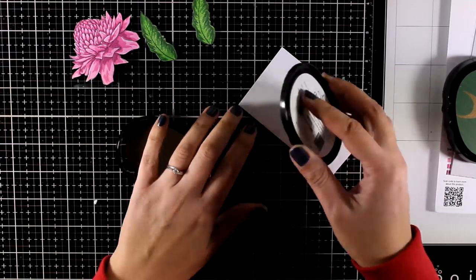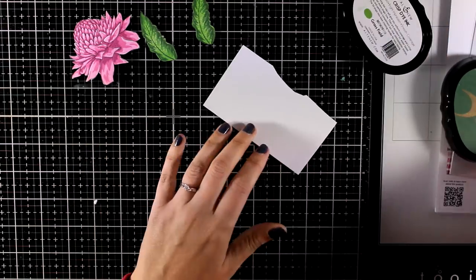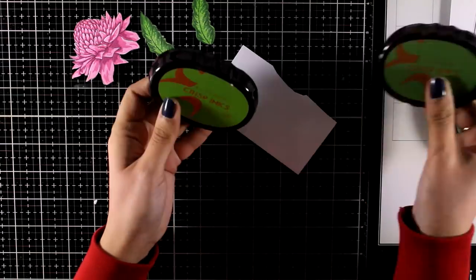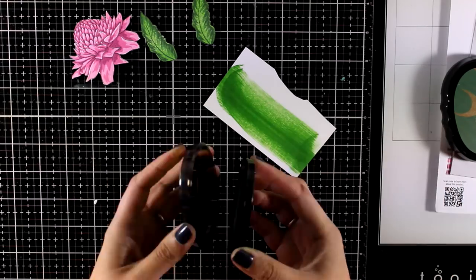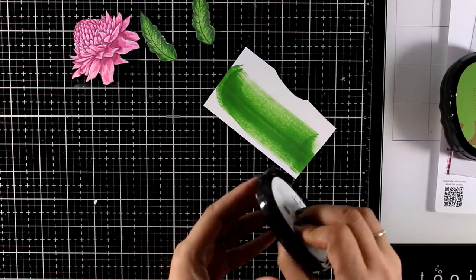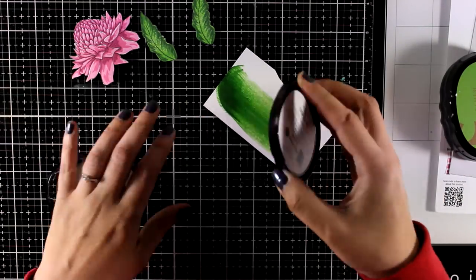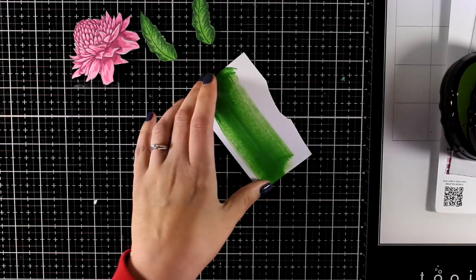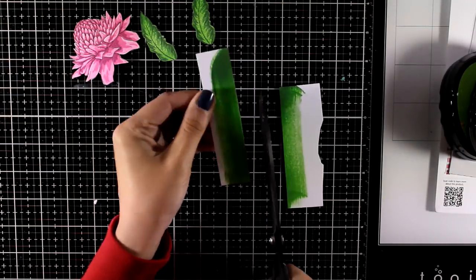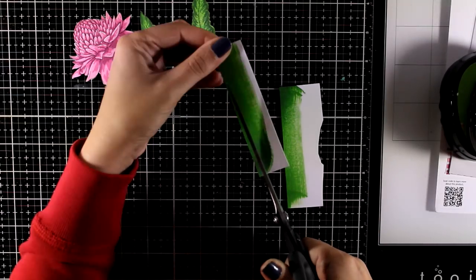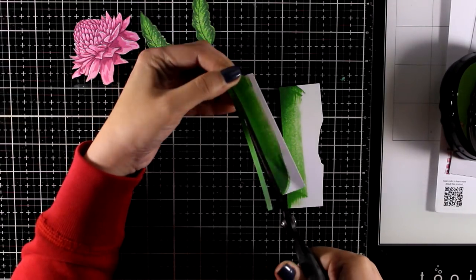I'm also going to need a stem for my focal point, so I'll use one of the ink pads I used for the leaves. I'm going to swipe it over a scrap piece of paper. I can even add a shadow on one end, then use my big scissors and cut out a strip of paper. So there is my stem.